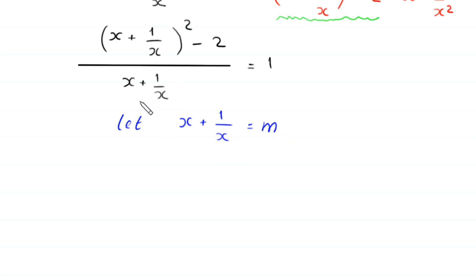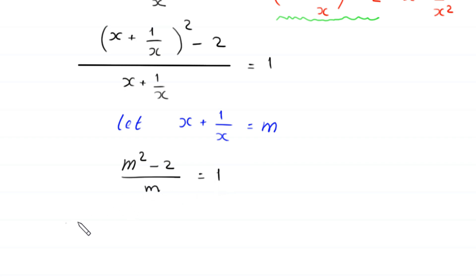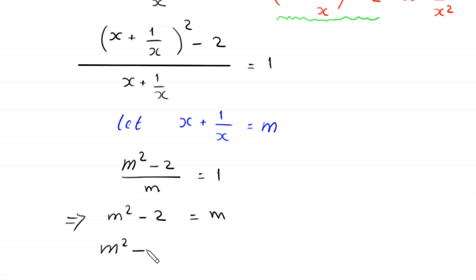Now we suppose that x plus 1 over x is equal to m and substitute m into this equation. Then the equation becomes m squared minus 2 divided by m is equal to 1. Multiplying both sides by m gives m squared minus 2 is equal to m.